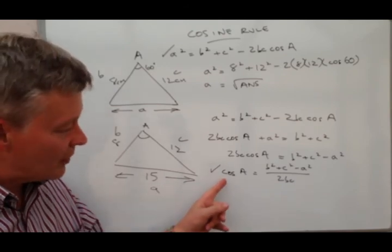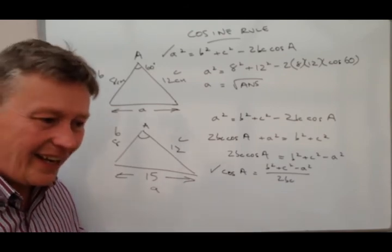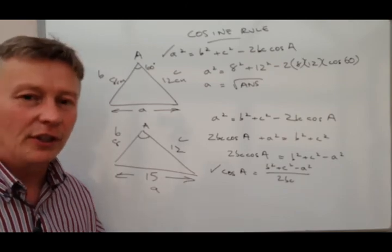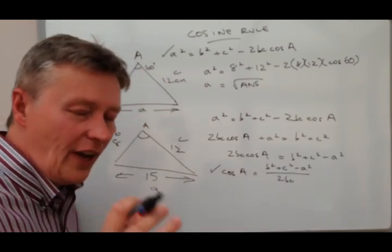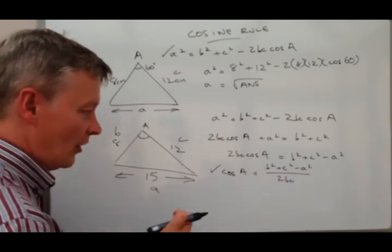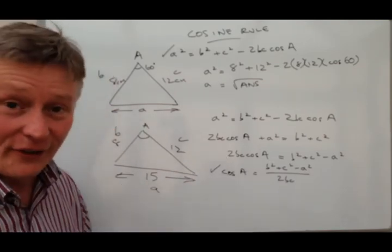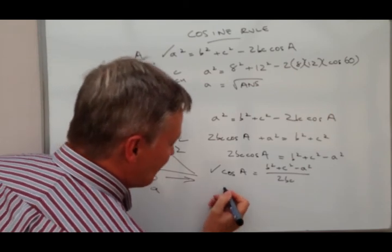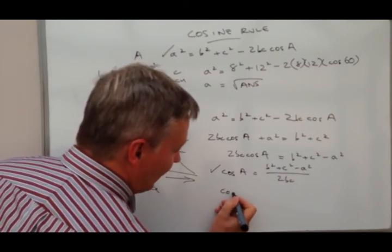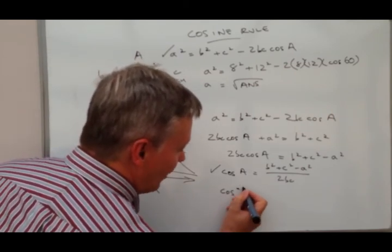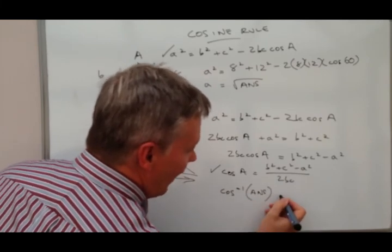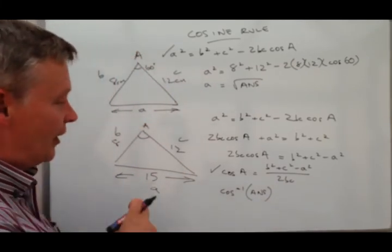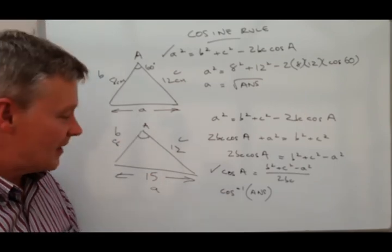So the other thing to remember is when you get to cosine A you've got to make sure that you could use cos to the minus 1, because you're looking for the value of A not the cosine of A. So the calculation will be something like cos to the minus 1 bracket answer. And that will give you the value of the angle that you're looking at.